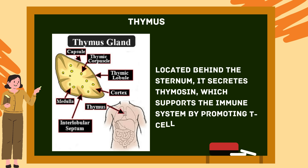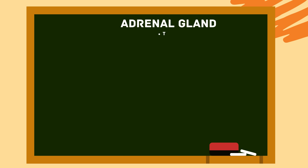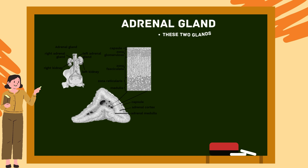Next is the thymus, located behind the sternum. It secretes thymosin, which supports the immune system by promoting T-cell development.